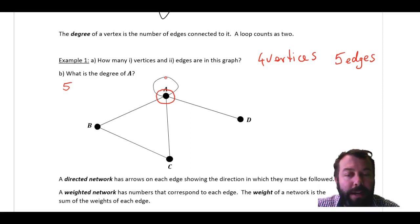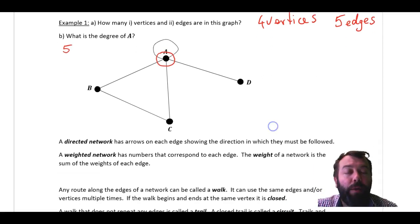Moving on now, a directed network has arrows, means that you can only follow those edges in the direction of the arrow. And a weighted network has numbers along each edge. And we call that the weight of that edge. That might be like the length of the road or something.